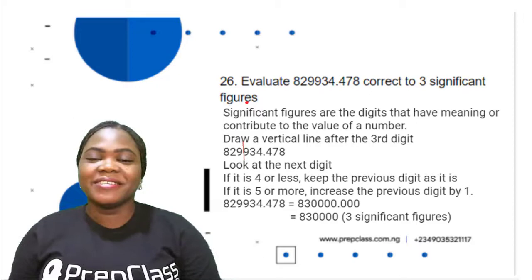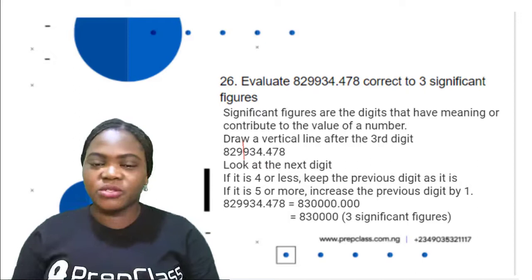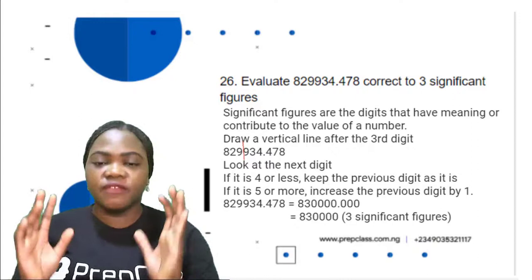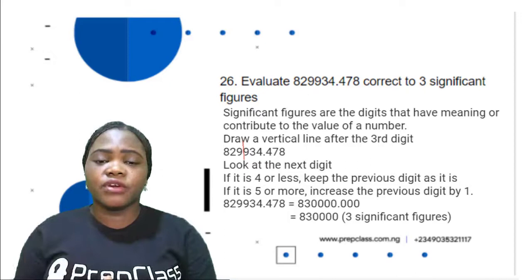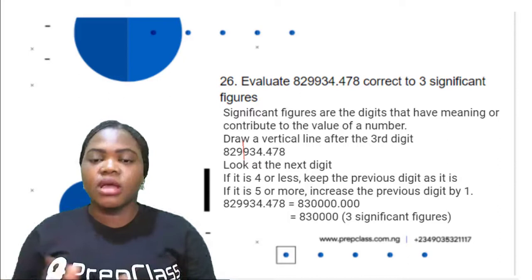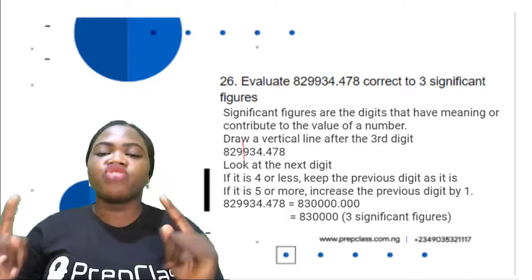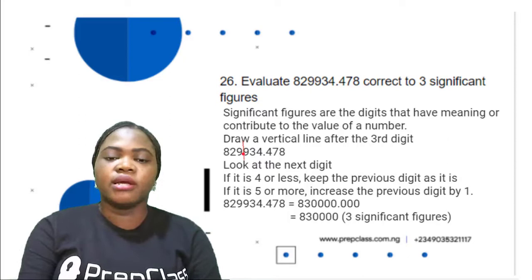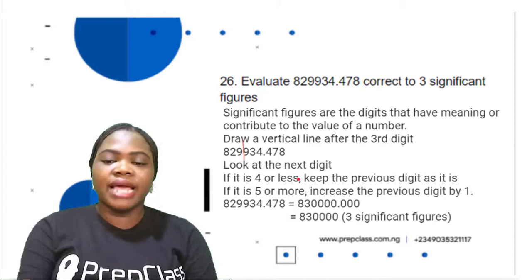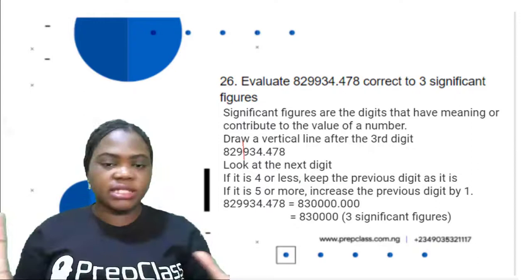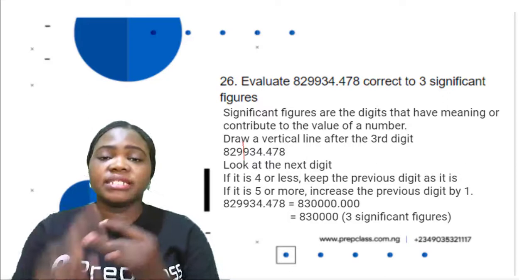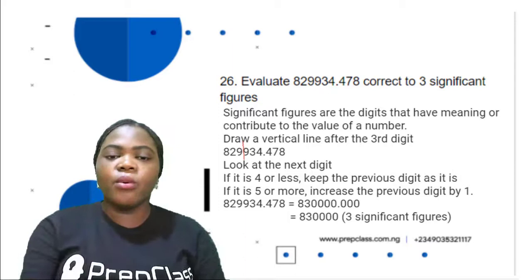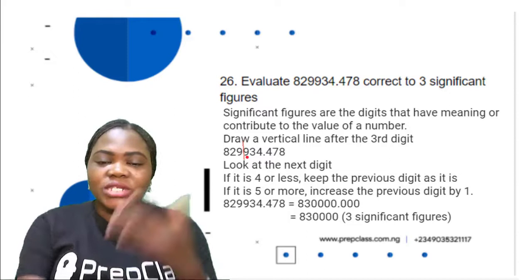What are significant figures? Significant figures are the digits that have meaning or contribute to the value of a number. To correct a number to a particular significant figure, all you have to do is draw a vertical line after the desired significant figures. Here we are asked to correct to three significant figures, so we draw a vertical line after the third digit. The first three digits are 829, so we put a vertical line after 829. Then look at the next digit: if it is four or less, keep the previous digits; if it is five or more, increase the previous digit by one. The next digit after 829 is 9, which is five or more.